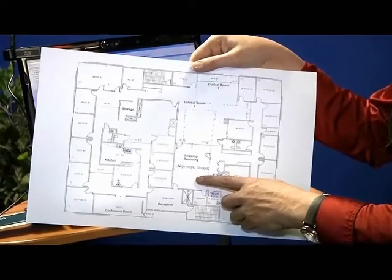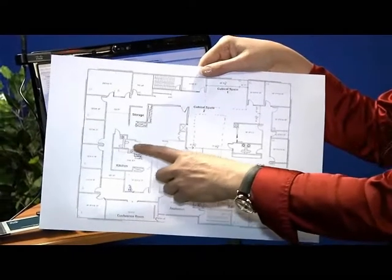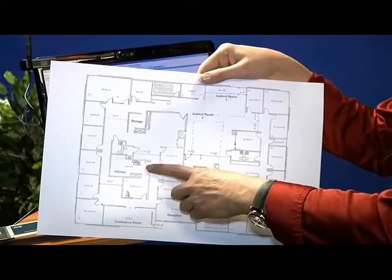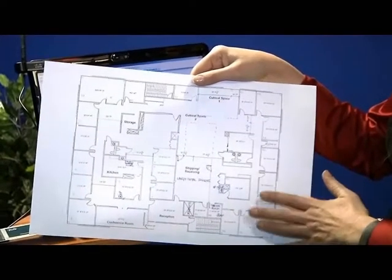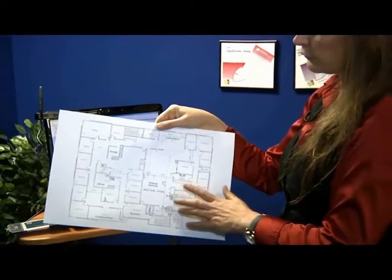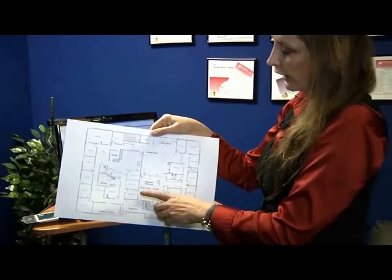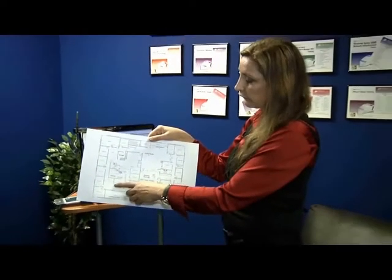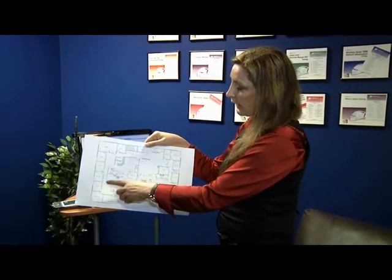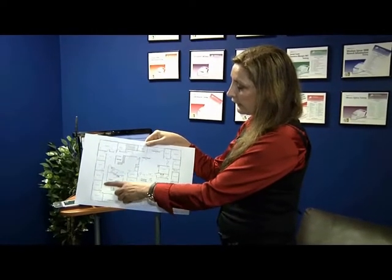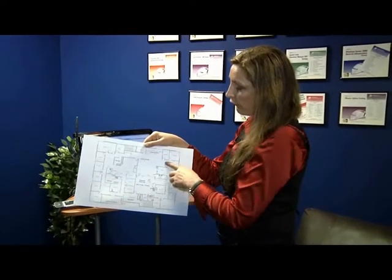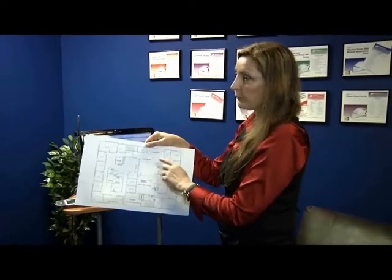I also noticed a couple of microwave ovens in the kitchen. With the site plan sorted, I decided on my walk-around strategy for looking for interference sources and clean channels — starting in one area and proceeding in a direction that covers the full building, coming up through the middle.